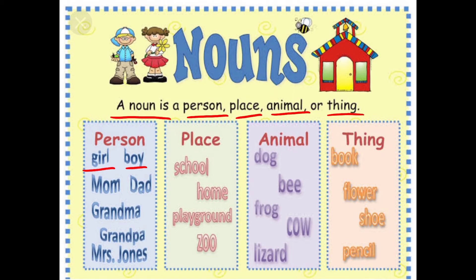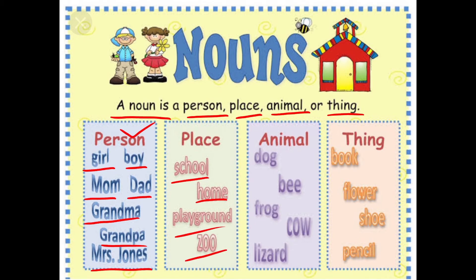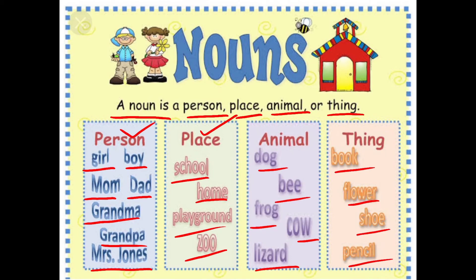Girl, boy, mom, dad, grandma, grandpa, Mrs. Jones — these are the examples of persons. School, home, playground, zoo — these are the examples of places. Dog, bee, frog, cow, lizard — these are the examples of animals. Book, flower, shoe, pencils — these are the examples of things.